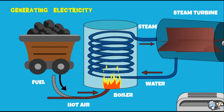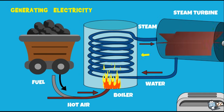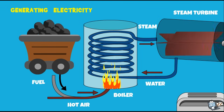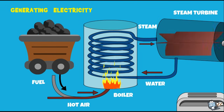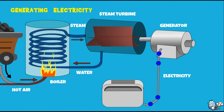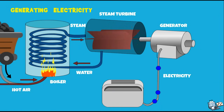Heat energy will cause water to heat sufficiently and move in a tank. Energy of motion is kinetic energy. The kinetic energy in moving water causes a turbine to turn a generator. A generator changes the kinetic energy of a spinning coiled wire to electrical energy.